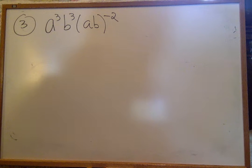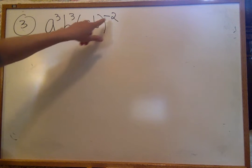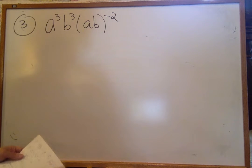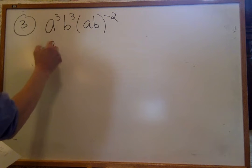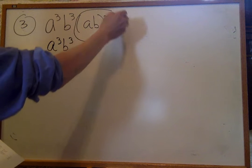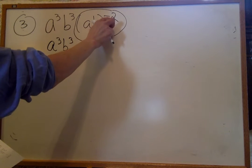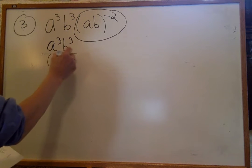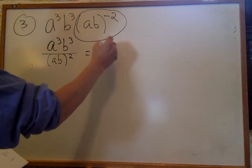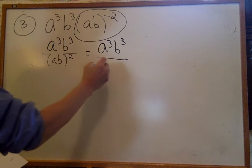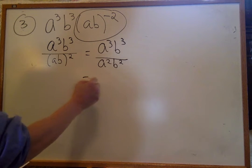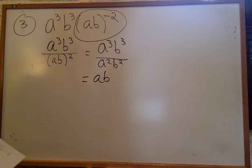Problem three — parentheses reminder: when you see a negative two outside the parentheses, that negative two is going to each one of those terms. This entire thing is to the negative two power. The negative says put me in the bottom. I have a cubed and b cubed. I know parentheses — I have to distribute it. So now I have a squared b squared in the denominator, and three minus two for each gives a times b in the numerator. The answer is a times b.